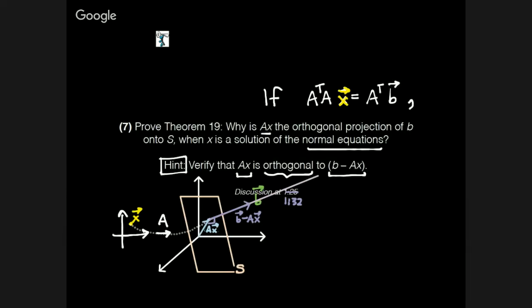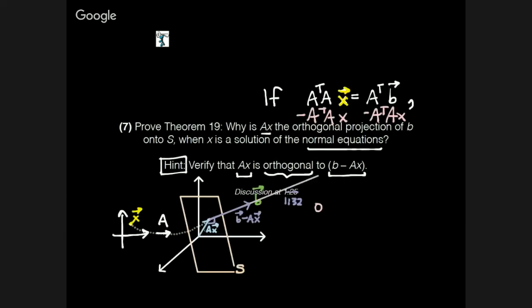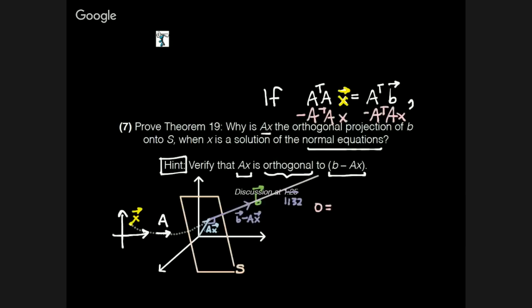So Jamie says, if you take the normal equations and you subtract from both sides A transpose Ax, so I'm going to come in here and minus A transpose Ax from both sides, then what we end up with, she says, is zero. That's the right hand side of what I have, and the left hand side of what she has is A transpose B minus A transpose Ax.